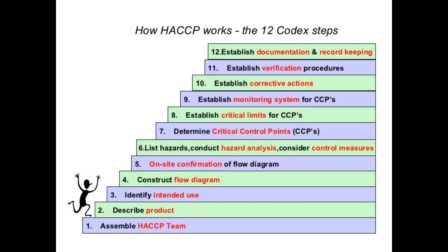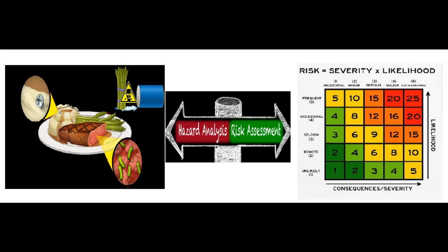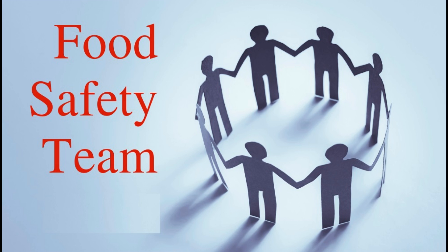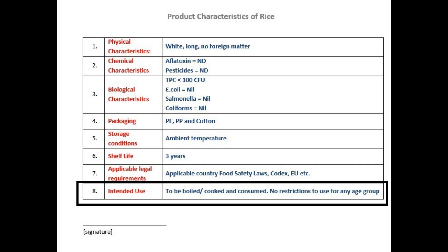The third step is to identify the intended use of the product. Identifying intended use is very important because it will determine the risk of the product and help the food safety team conduct appropriate risk assessment. The team needs to describe the projected use of the product and mention the expected consumers, including which consumer groups should avoid it — for example, if a product has high sugar content, mention that it is not suitable for diabetic patients.